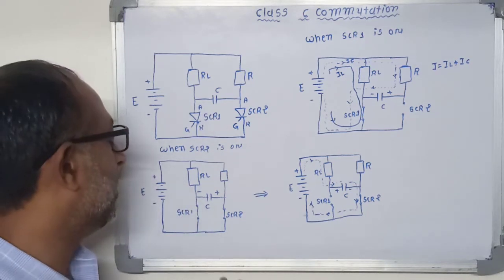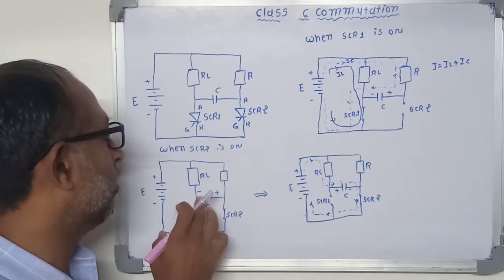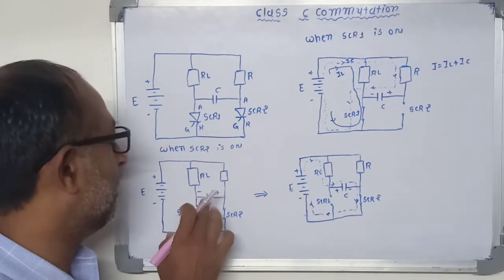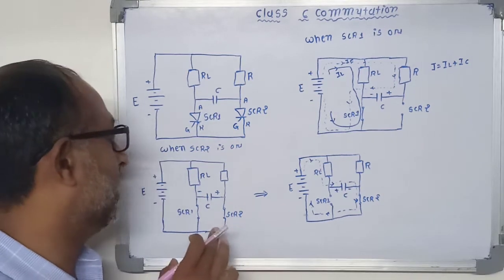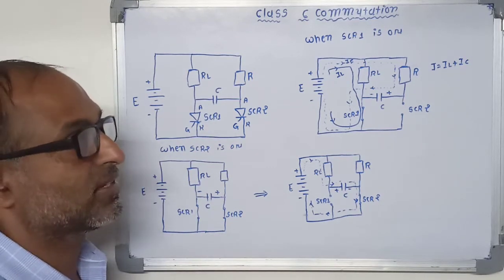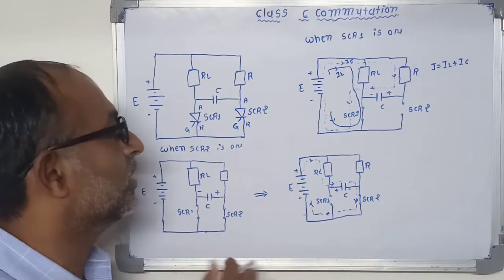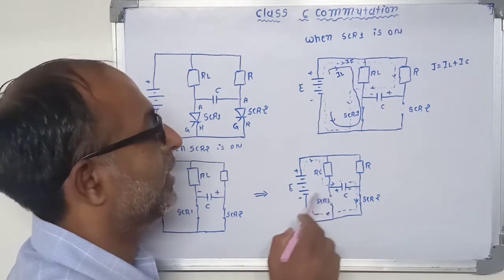So from that we can say that SCR1 is getting anode having positive and negative polarity supply and cathode having positive polarity of the supply. That means SCR1 is reverse biased. Now due to this reverse bias across this SCR1 which turns off the thyristor 1 or main thyristor.